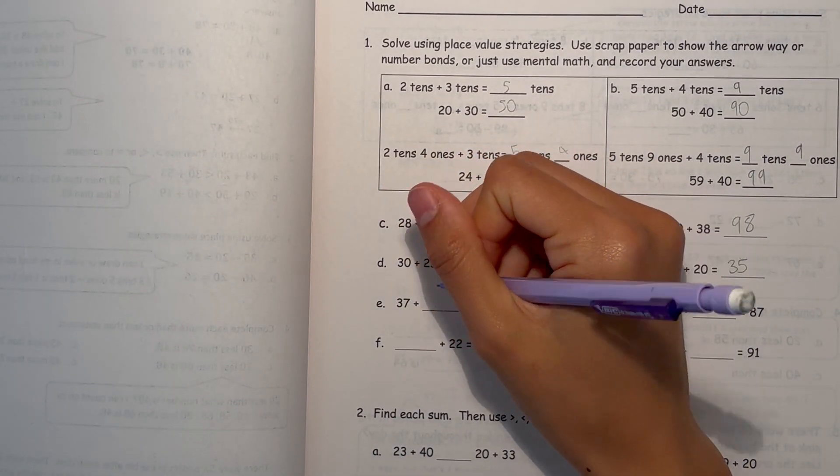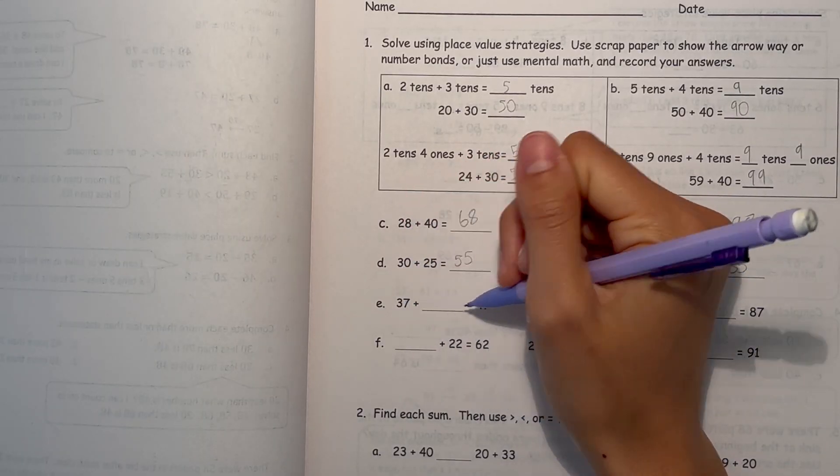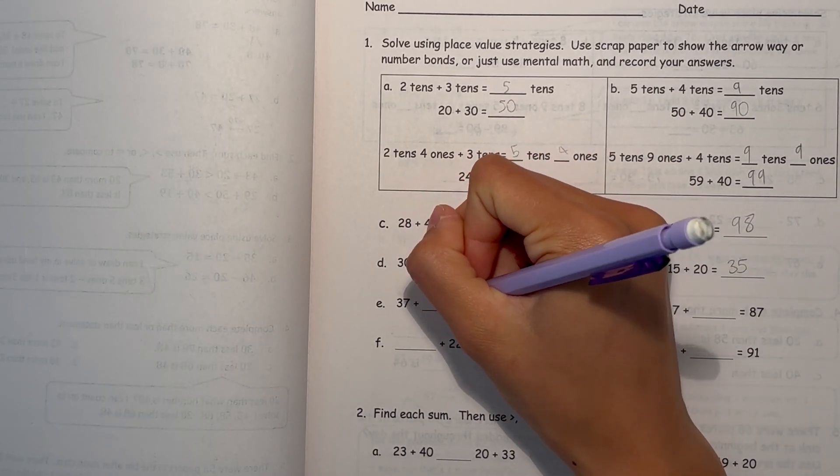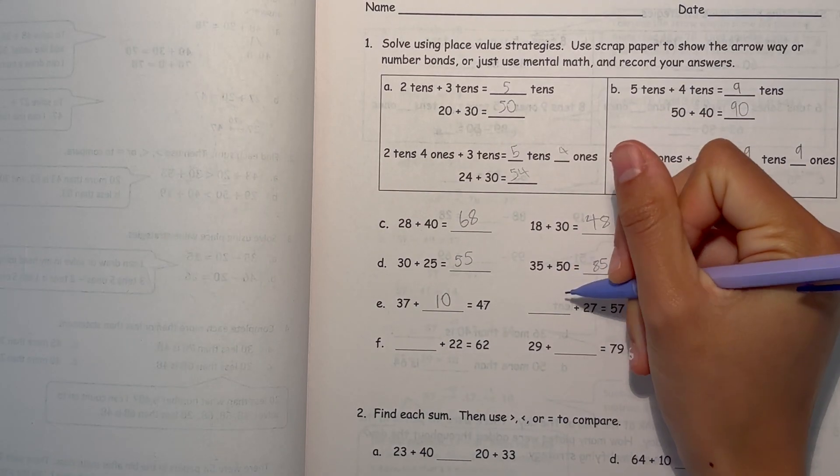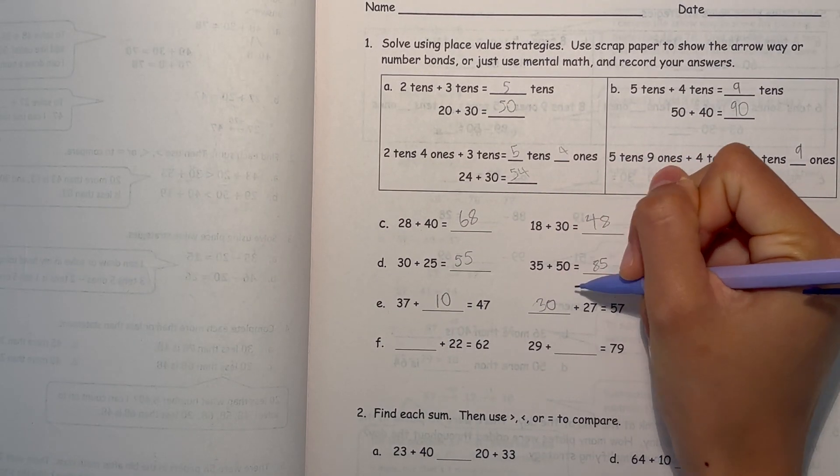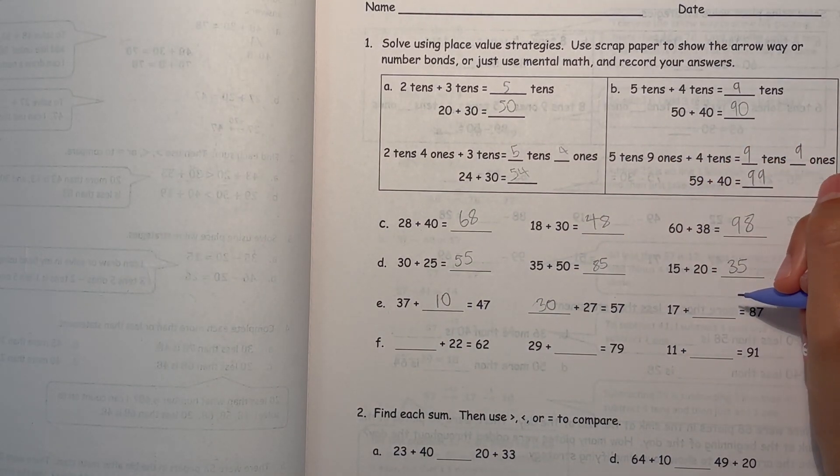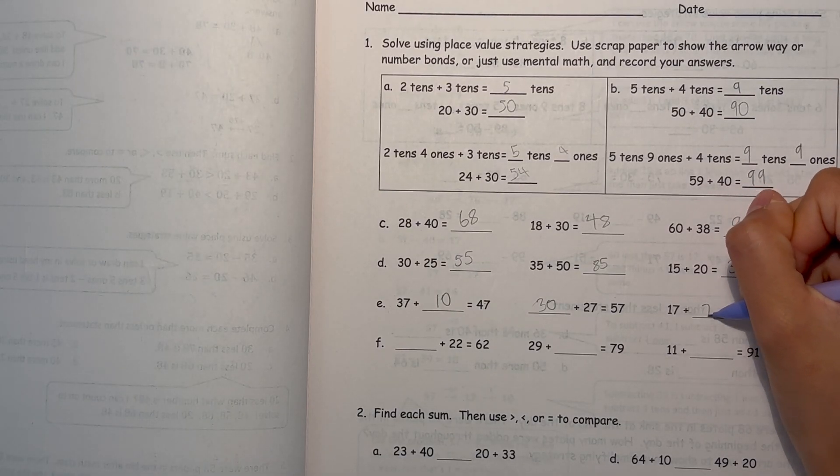Alright, now E, 37 plus blank equals 47. Well, the ones stay the same, but the tens change by 1. So you plus 10. Now 30 plus 27 is 57. And 17 plus 70 is 87.